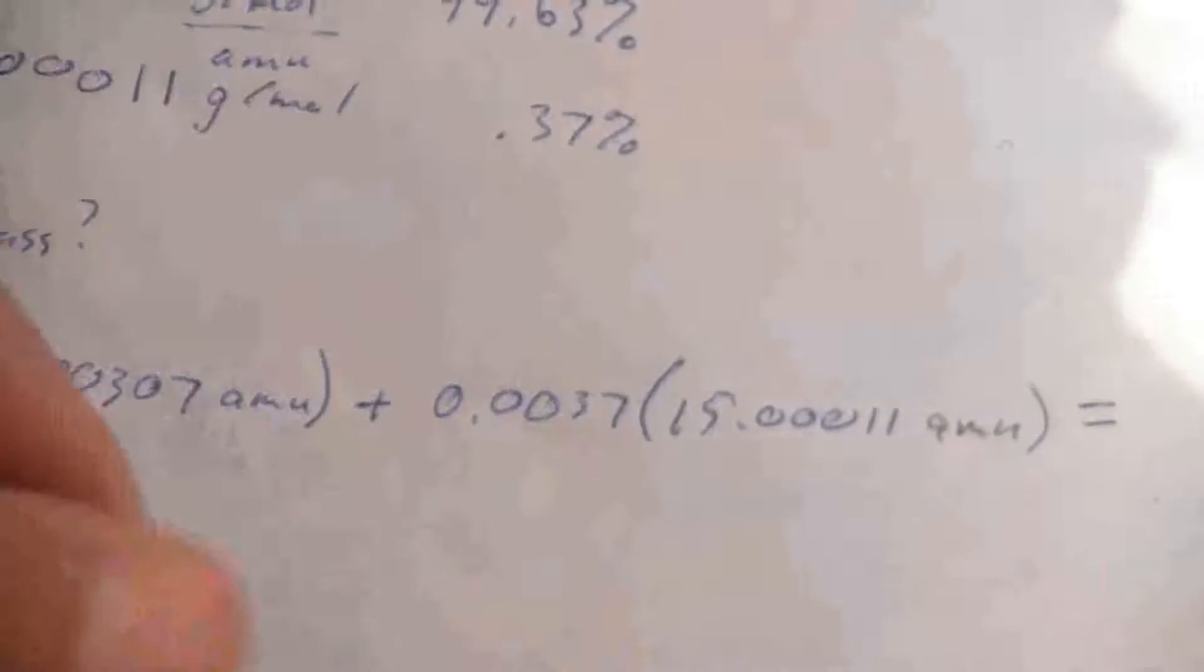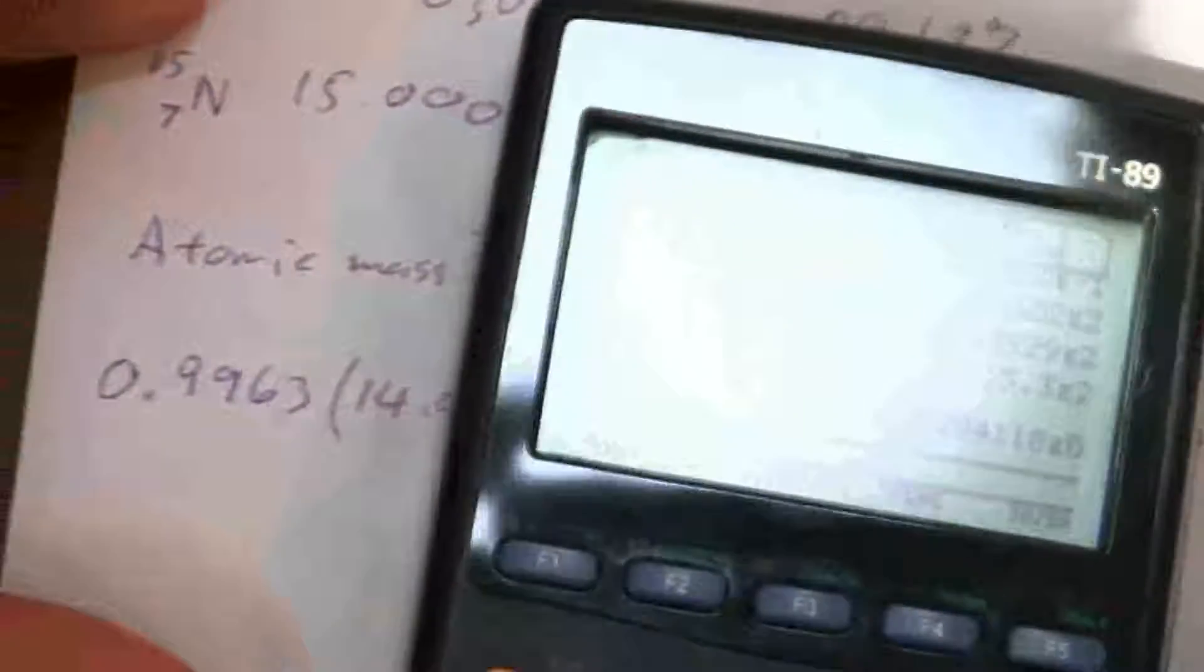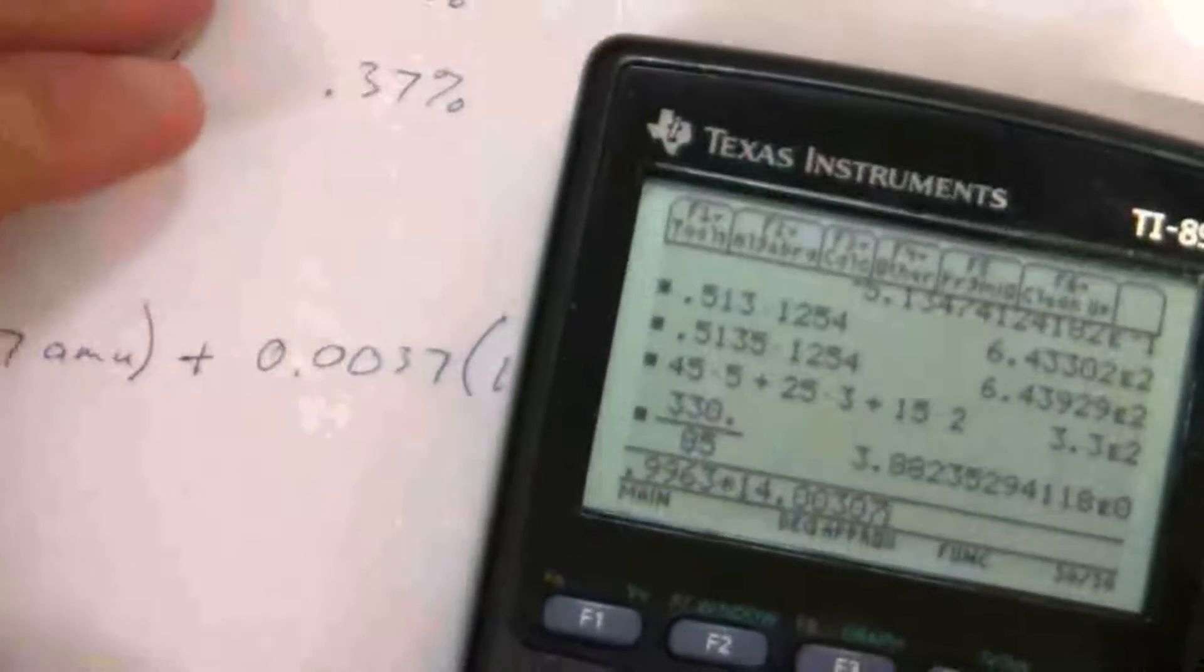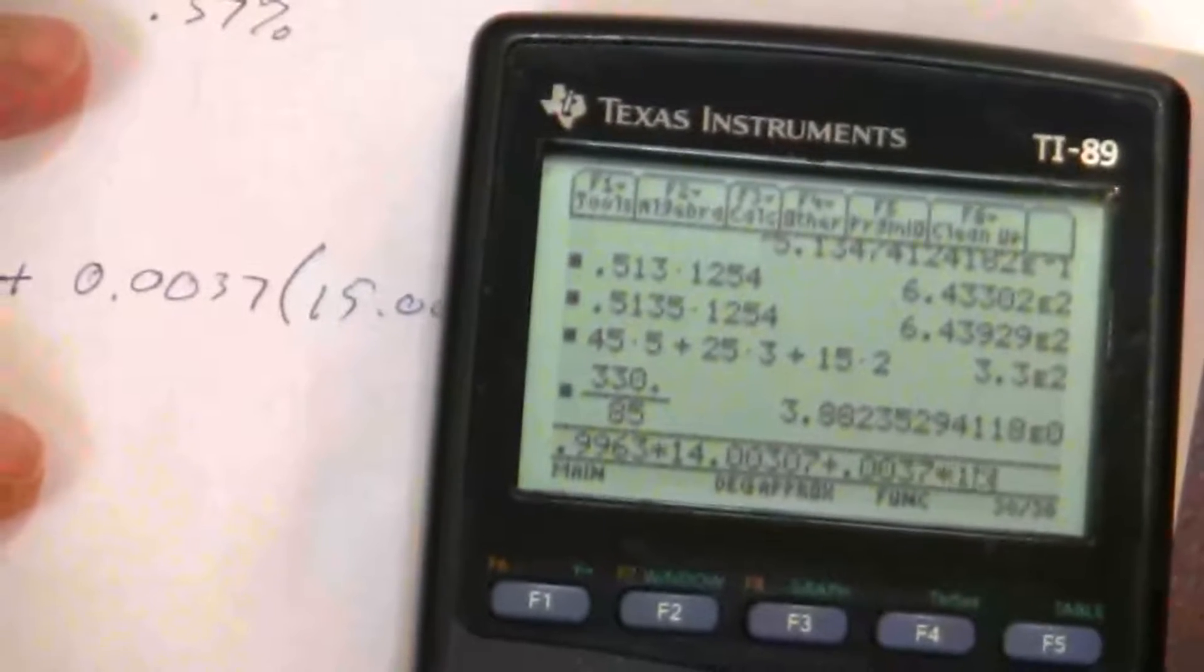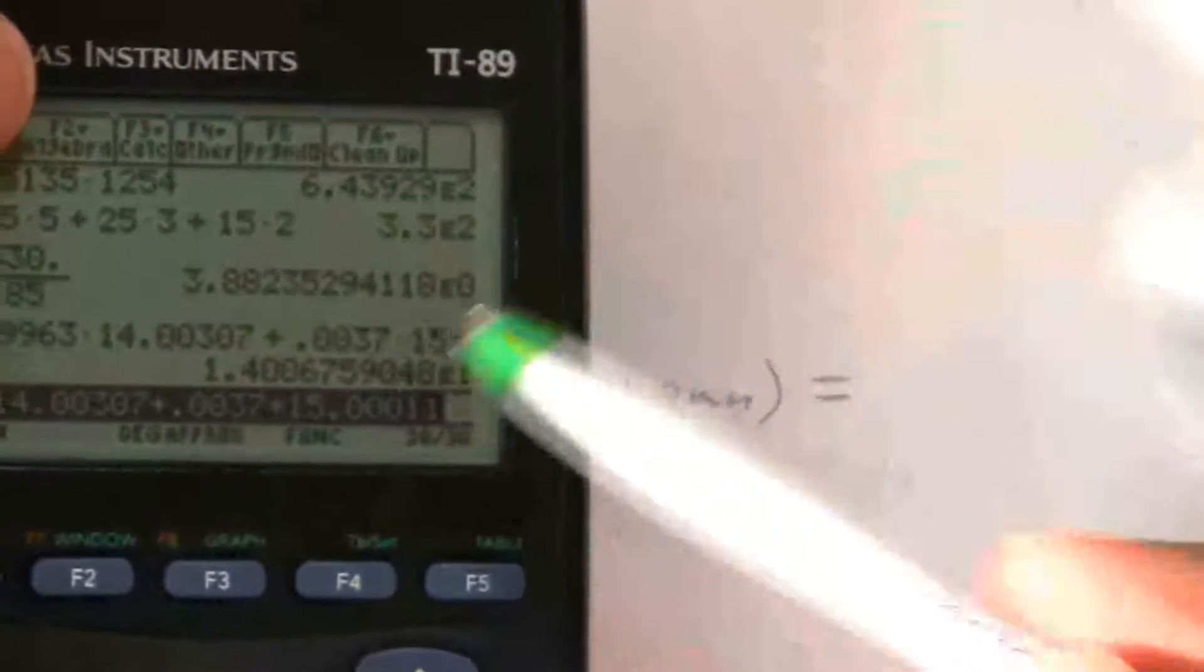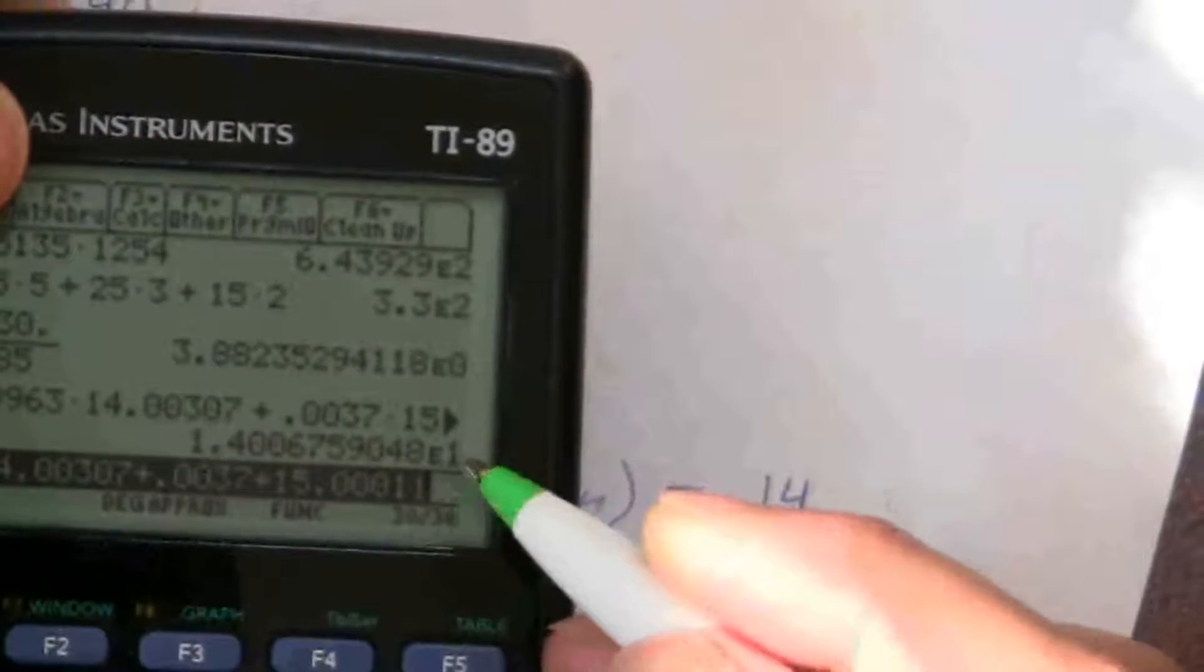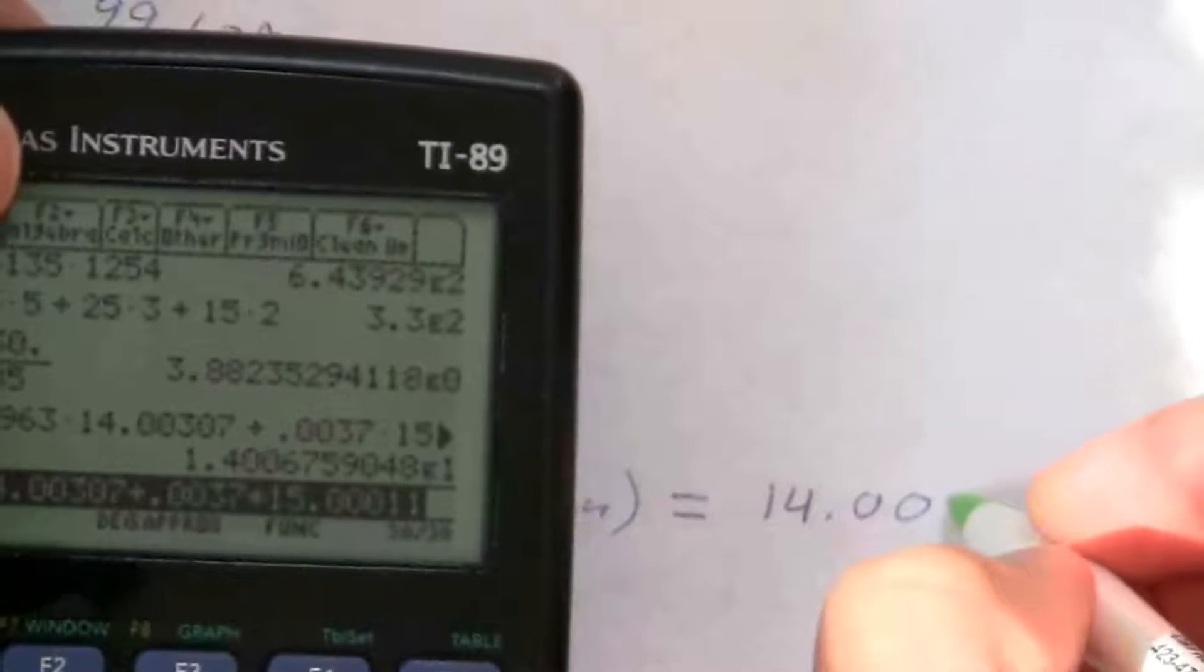So I just put this in the calculator and I should get my atomic weight. 0.9963 times 14.00307 plus 0.0037 times 15.00011. And there is my atomic mass for nitrogen, the average, the weighted average of both of those isotopes. Remember this is times 10 to the 1 in my calculator, so that's 14.00676.